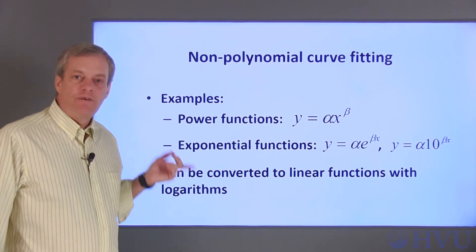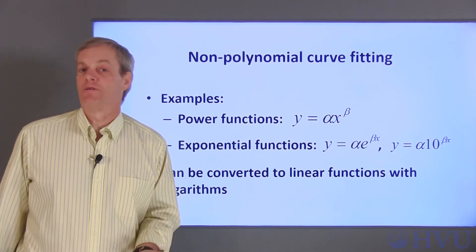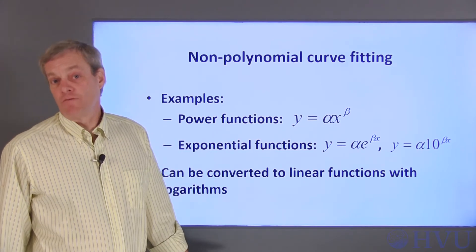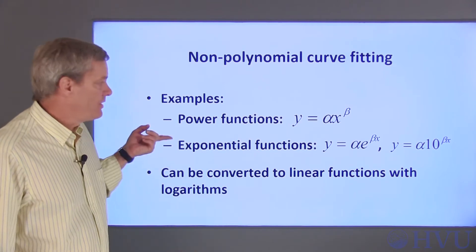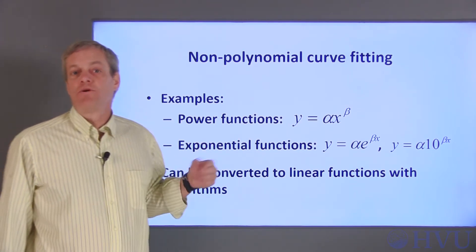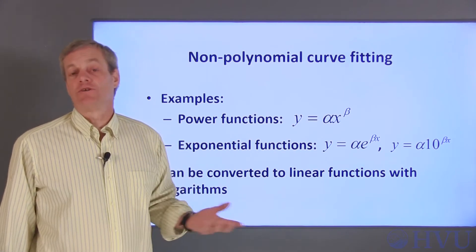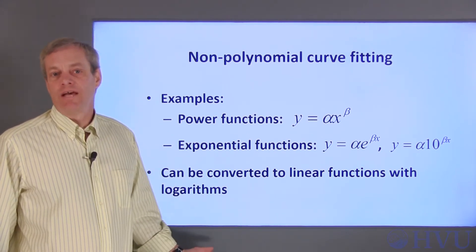All of these types of functions can be transformed into linear functions by using logarithms. We can then perform a curve fit of the linear function and undo the transformation to determine the coefficients alpha and beta in these functions. The approaches presented here for these functions are also applicable to some other types of functions, but I'll just go over a couple of examples in this video.